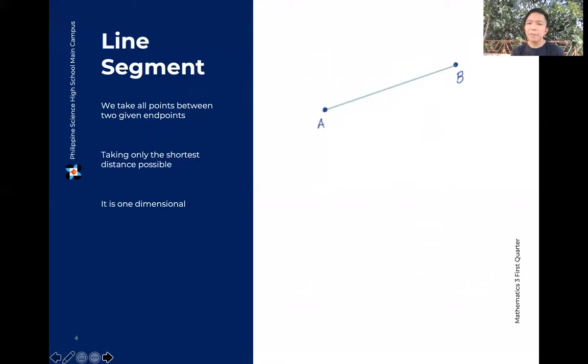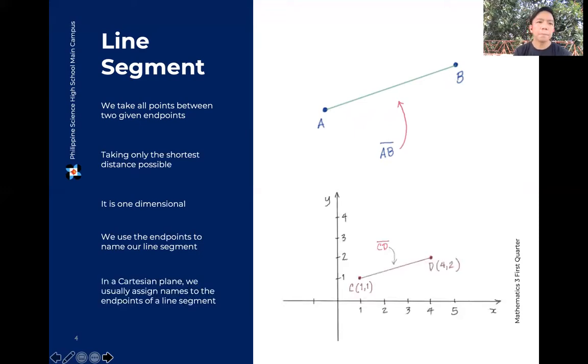It is one-dimensional, meaning pwede mo siyang sukatin, but in one direction only. And that's along the line segment. And para bigyan siya ng pangalan, ginagamit natin yung points sa magkabilang dulo, yung endpoints. So we call this line segment AB. Sulat natin A and B magkatabi. Tapos meron tayong mixing line segment yung representation dun sa taas ng dalawang point.